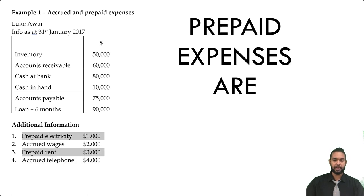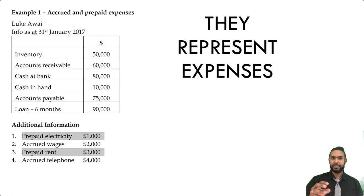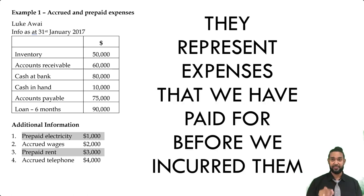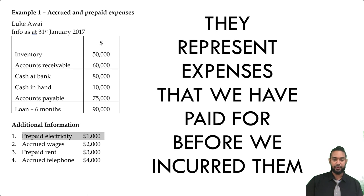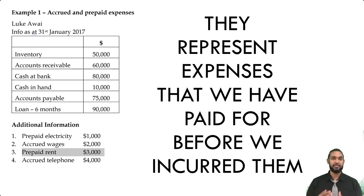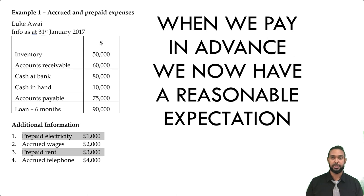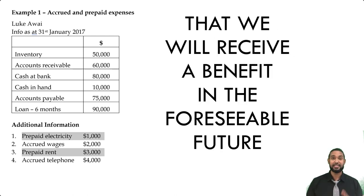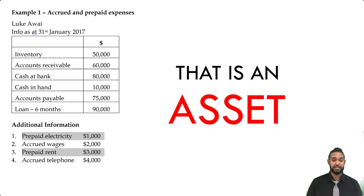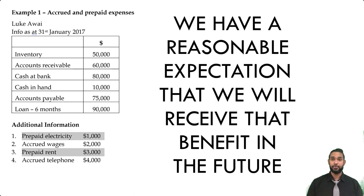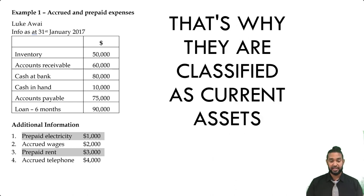Prepaid expenses are current assets because they represent expenses paid before they've been incurred. For example, electricity paid in advance of using it, or rent paid before occupying the space. When we pay in advance, we have a reasonable expectation of receiving a benefit in the foreseeable future — and that is an asset. We may not own the electricity or the property, but we can reasonably expect that benefit, which is why prepaid expenses are classified as current assets.